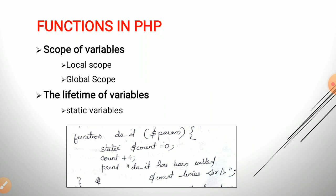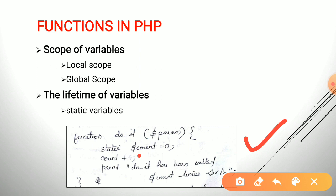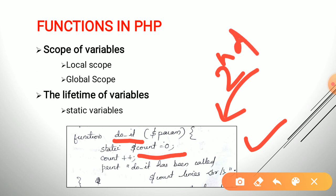In PHP, a local variable in a function can be specified as static by declaring it with the reserved word 'static'. When a variable is declared static, its lifetime extends until the browser leaves the document in which the PHP script is embedded. In this example, dollar count is declared as a static variable. When the function 'do_it' is called for the first time, count is incremented by 1 and prints 'do it has been called 1 times'. On the second call it prints 2 times, and so on — this function displays the number of times it has been called.